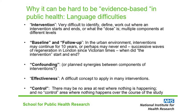Sometimes the jargon can be used imprecisely or have contested meanings. For example, the word 'intervention' is often used to describe the thing being evaluated. Sometimes the intervention is very clearly defined — it may be a new medicine or an eight-week course to encourage healthy eating. But other types of intervention are more complex, such as a large urban regeneration programme involving a range of different activities affecting homes, neighbourhoods, and the economy.